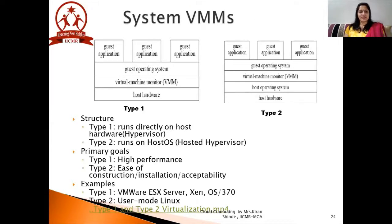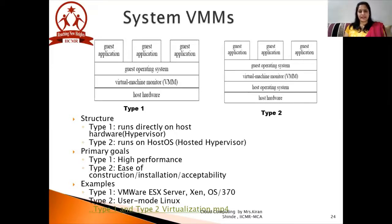Here we can see with the image type one and type two — there are two categories that come along with the hypervisor. In type one, at the bottom side there is host hardware, and on top of it you can see the virtual machine monitor software. On top of the VMM, you can see the guest operating system along with various guest applications. In type two, at the bottom is the host hardware, on top of which the host operating system is installed, then the virtual machine monitor software, and then on top of VMM, various virtual machines are created along with various desktop applications.